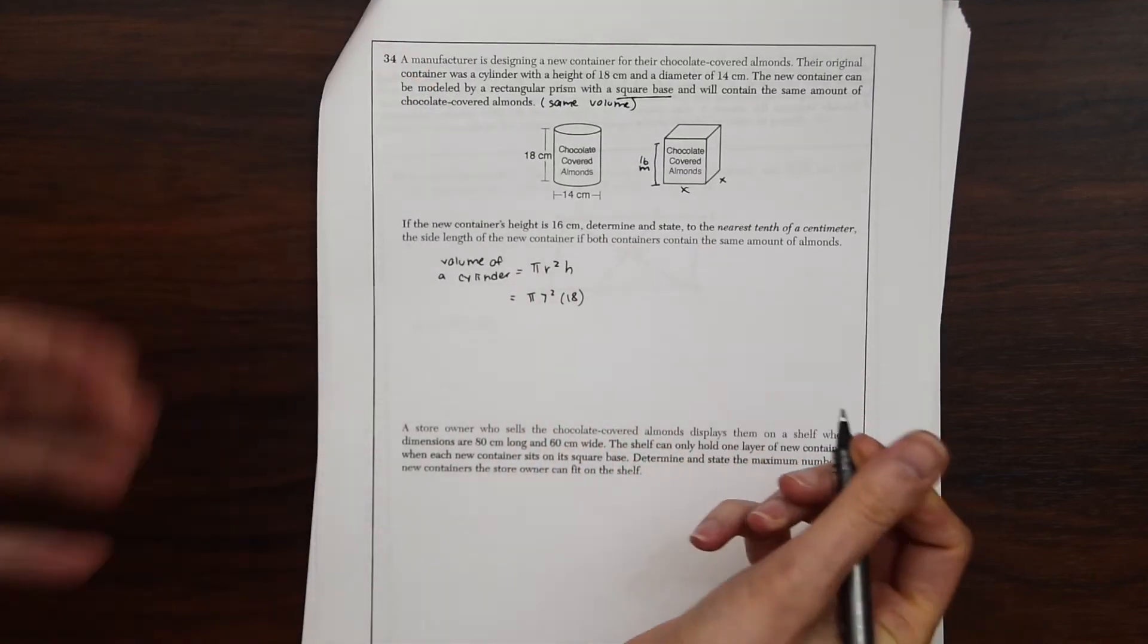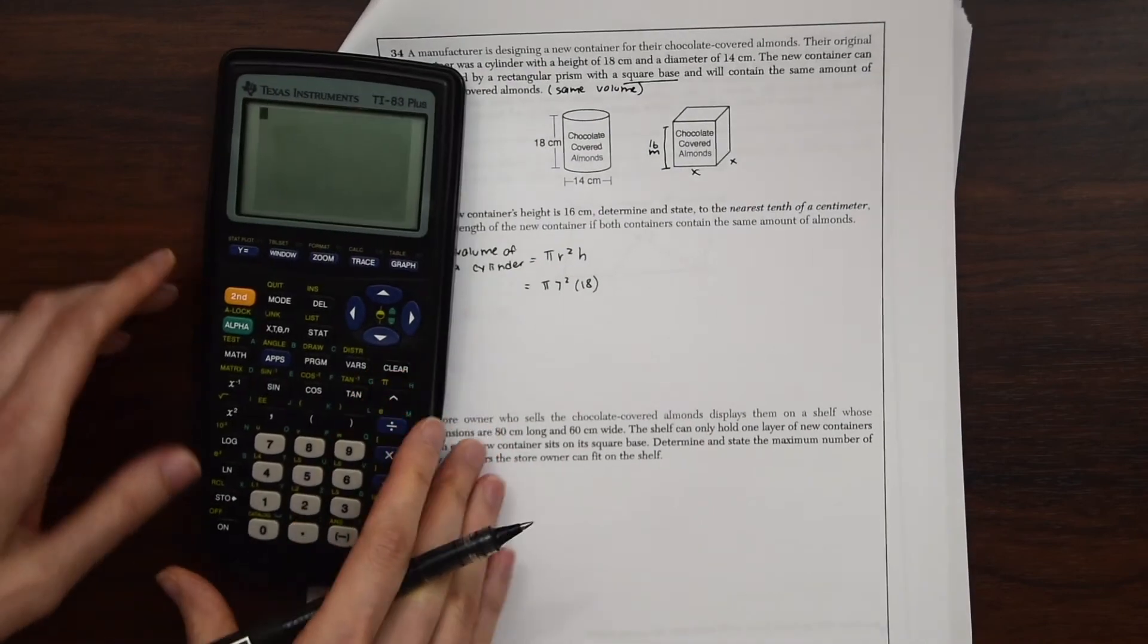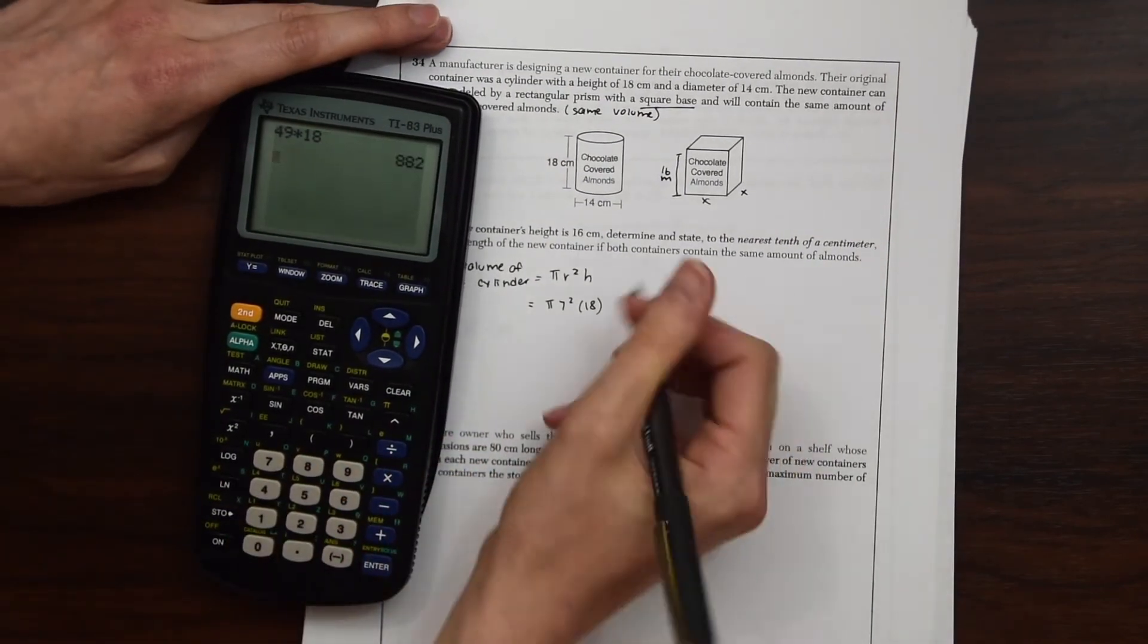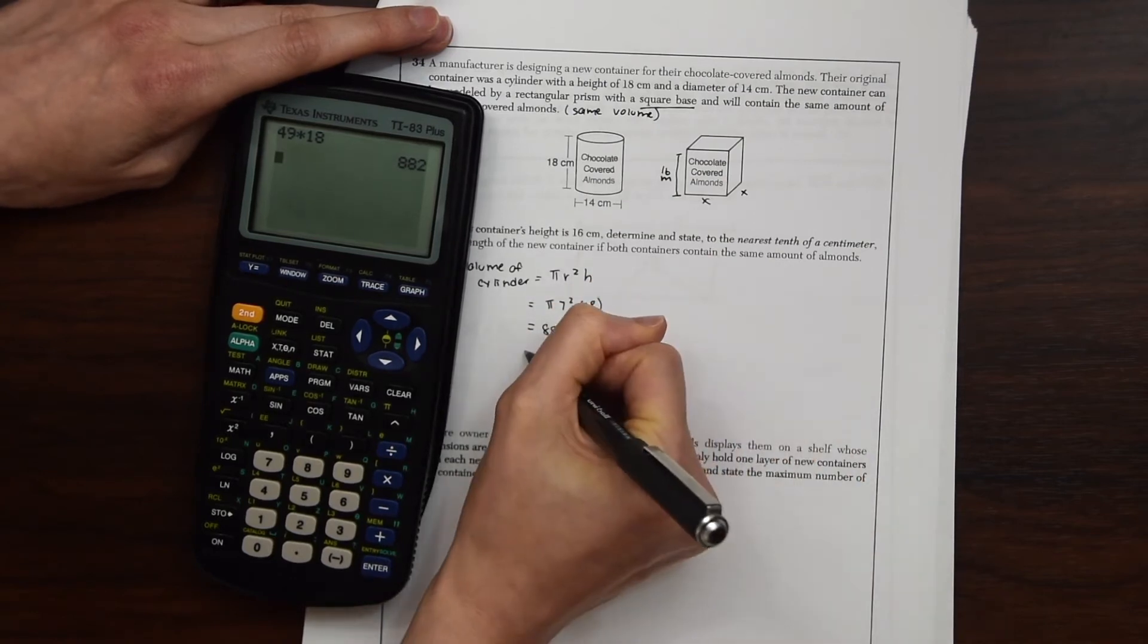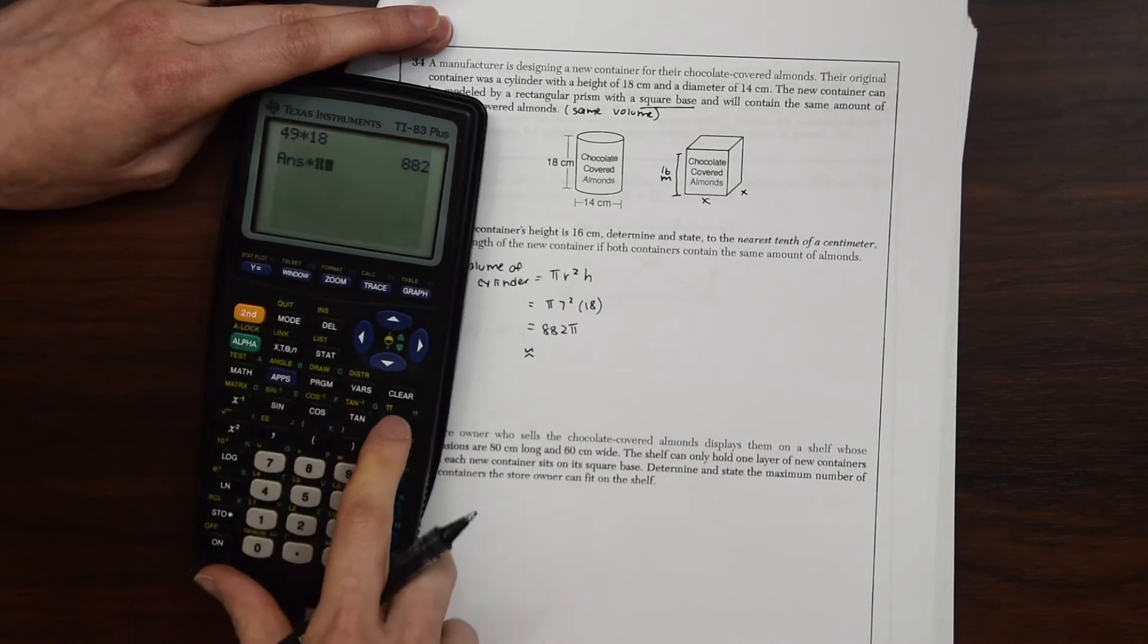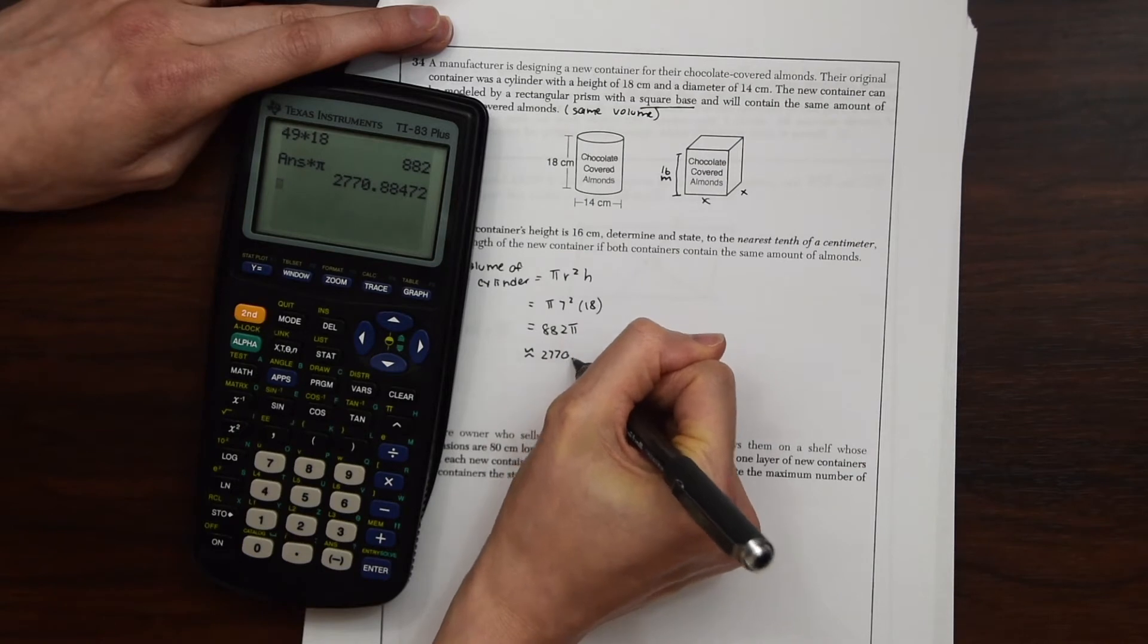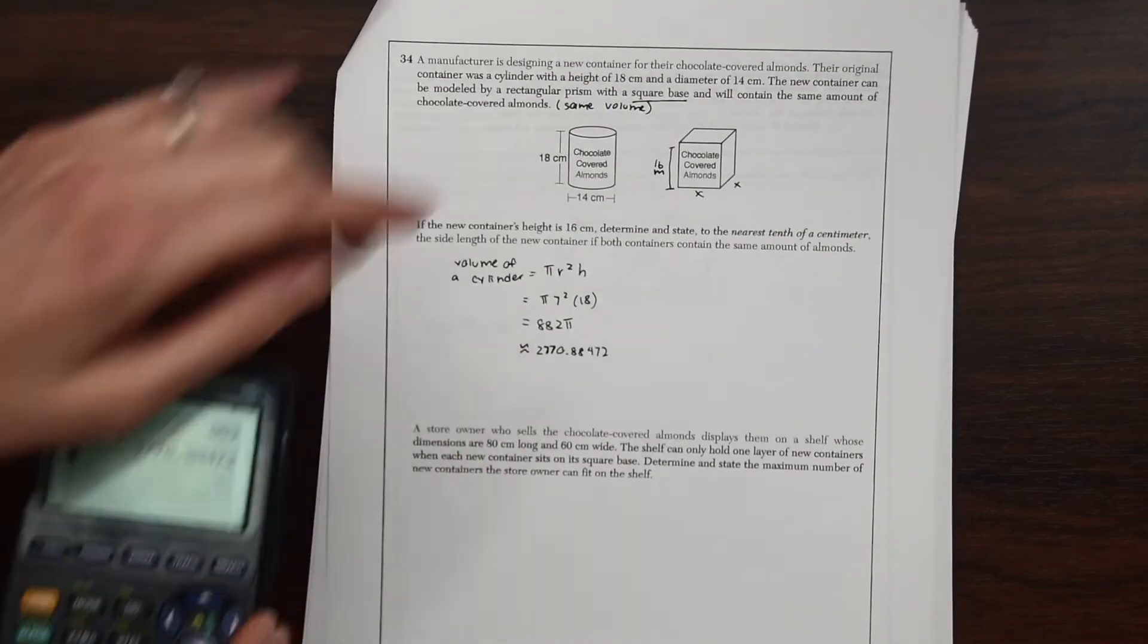So if we plug this into our calculators, we're going to get 49 times 18, which gives us 882π. And we can also just estimate that. So if we multiply this times π, we're going to get 2770.88472. Okay, so that's the volume of the cylinder.